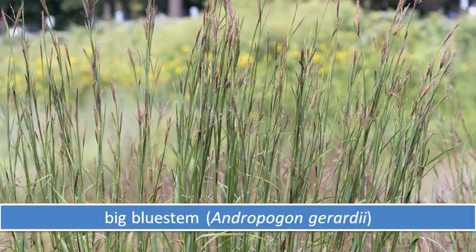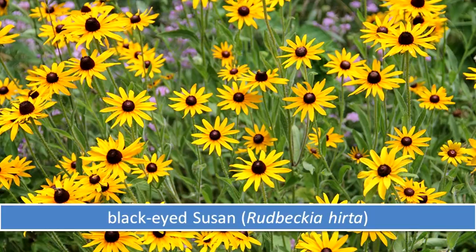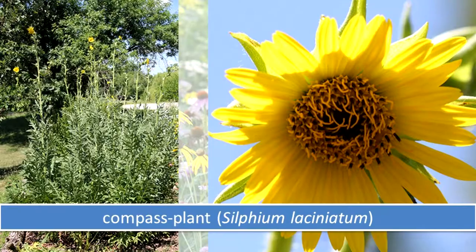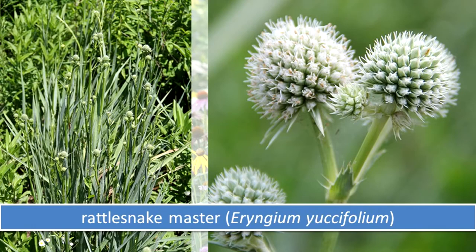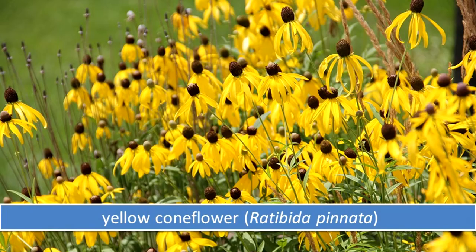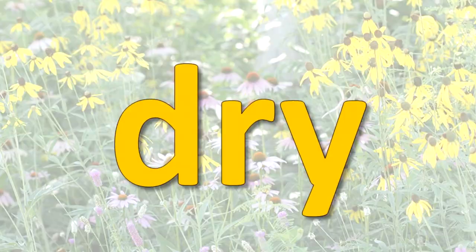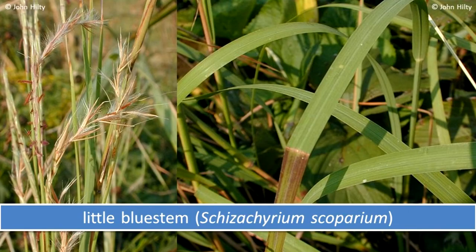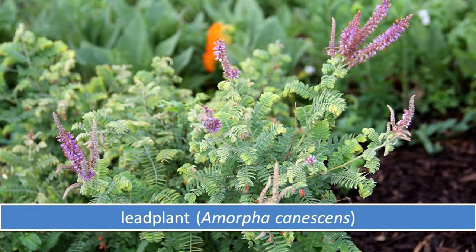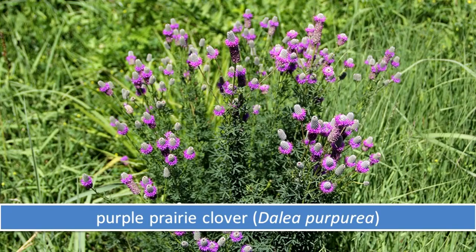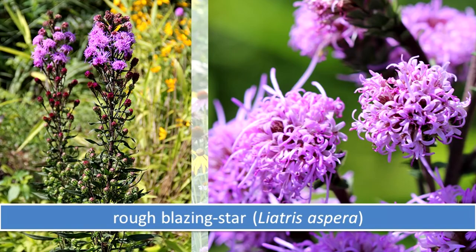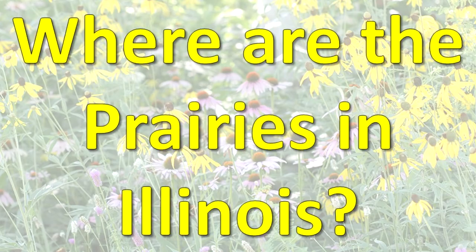Mesic prairies have a medium amount of water during the year. Big bluestem, black-eyed Susan, compass plant, rattlesnake master, and yellow coneflower live in mesic prairies. Dry prairies are inhabited by such plants as little bluestem, lead plant, purple prairie clover, and rough blazing star.